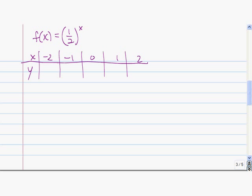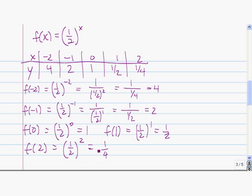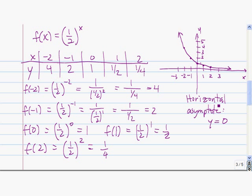Fill in this table of values so we can get the graph of f(x) = (1/2)^x. These are the values you should have gotten. Let's plot the points and fill in the graph. This is the graph. In this case, it grows in the negative infinity direction and goes towards 0 in the positive infinity direction. And again, we have a horizontal asymptote of y = 0.